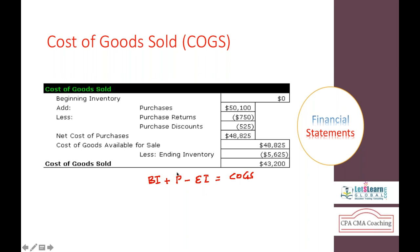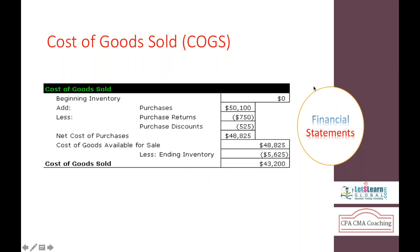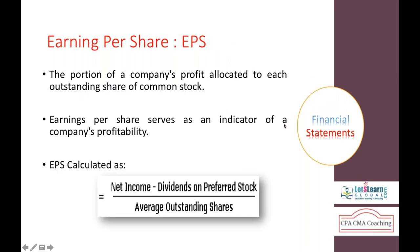Net cost of purchases includes purchase cost minus purchase returns, plus transportation. Added to beginning inventory and minus ending inventory gives cost of goods sold. Deducting cost of goods sold from sales gives us gross profit.